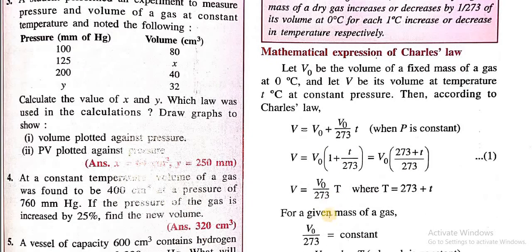And 273 plus T, where T is the temperature in Celsius. If you add 273, as we know, it will give the Kelvin temperature, which is denoted by capital T.